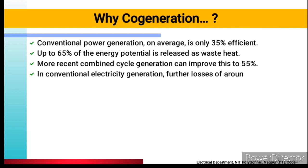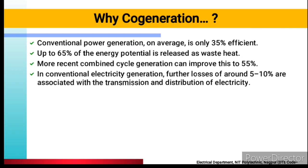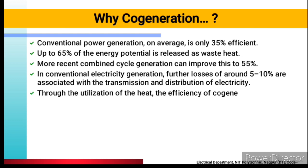In conventional electricity generation, there are further losses of around 5–10% associated with transmission and distribution. After 35% electricity is generated, we transmit it and then distribute it, and that also incurs 5–10% losses. So you are using 100% of fuel to generate electricity but you get only about 35% output. However, if we use co-generation, then the efficiency of the co-generation plant can reach 90% — you can get up to 90% energy.